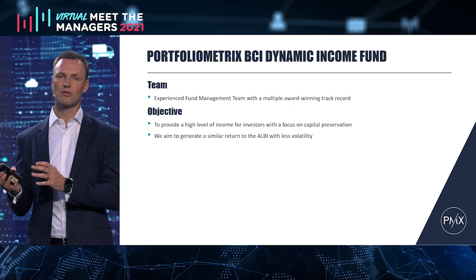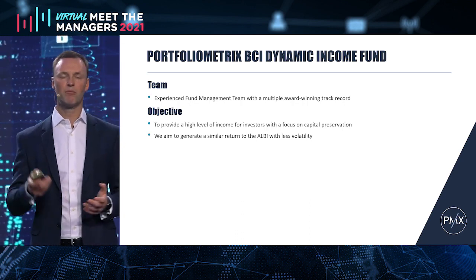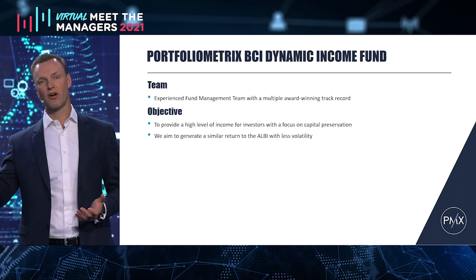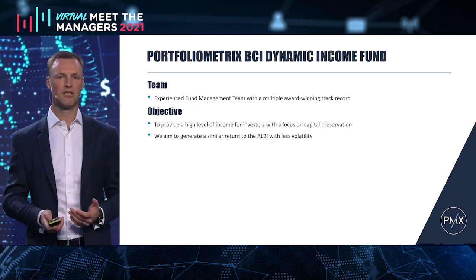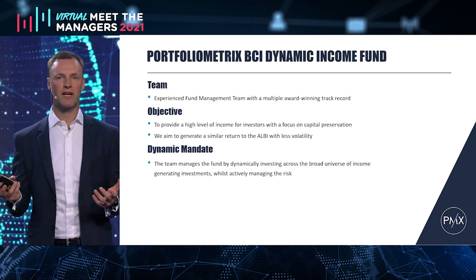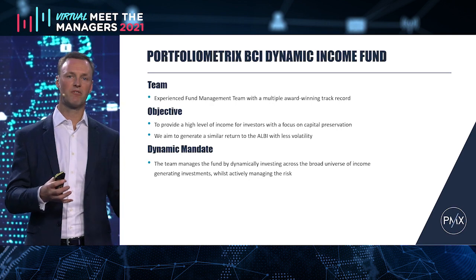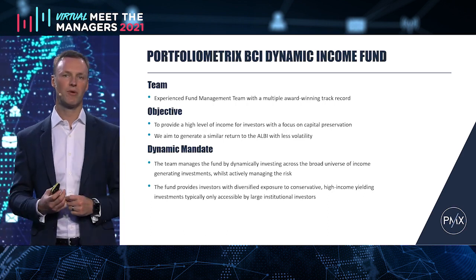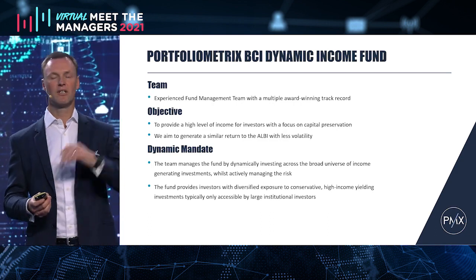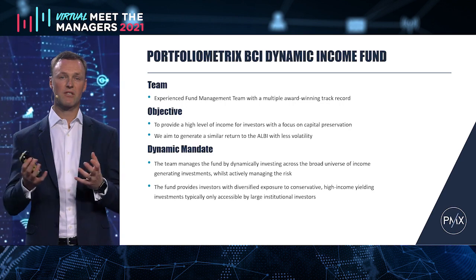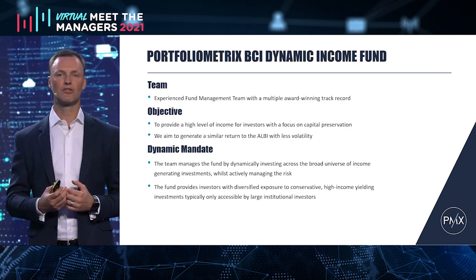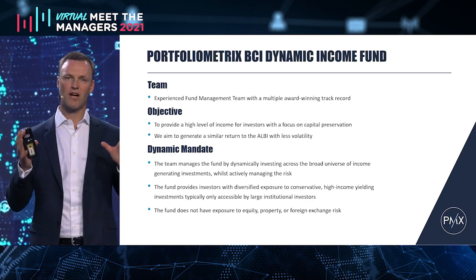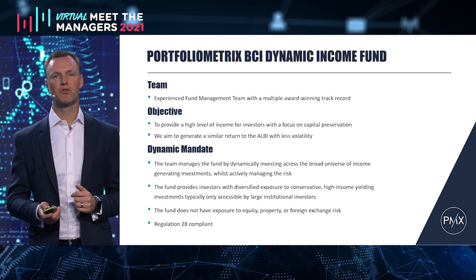We also want to provide a similar return to the All Bond Index but with less volatility. Most investors are caught right now in income funds that are not giving them 8%, 9%, or 10% anymore — they're giving 4%. They want bonds, but know that going into the All Bond Index means much more volatility. So we have a much more dynamic mandate where we invest across some income-type investments and also buy some fixed-rate bonds. By doing this, we give investors access to investments that are only available to large institutional investors like ourselves — these are not investments that individuals can access in their personal capacity. We don't have any exposure to equity, property, or foreign exchange; we're just trying to provide the best rand income return possible, and we're Reg 28 compliant.